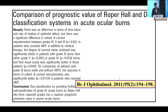Comparing the prognostic value of the Roper Hall and Dua classification systems: Dua is superior because it offers two more grades. Roper Hall only goes up to four, so Dua gives a better idea of prognosis and outcomes.